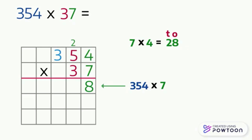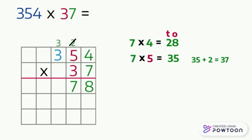Then we multiply 7 by the tens digit, which is 5 — seven times five equals 35. Then we add the carry, which is 2, giving us 37. Don't forget to cross out the carry so you don't use it again. We write 7 in the tens place in the answer line and carry 3.